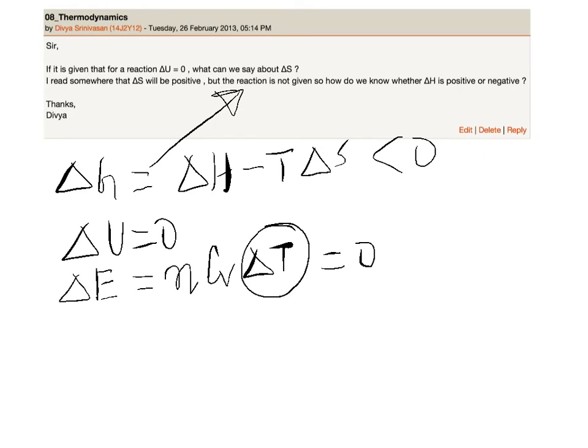And therefore delta H itself, which is equal to n Cp delta T, must be zero because delta T itself is zero.